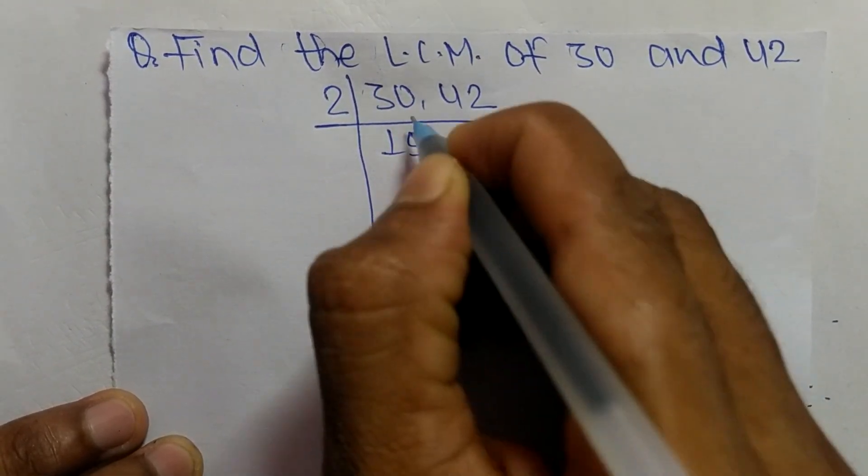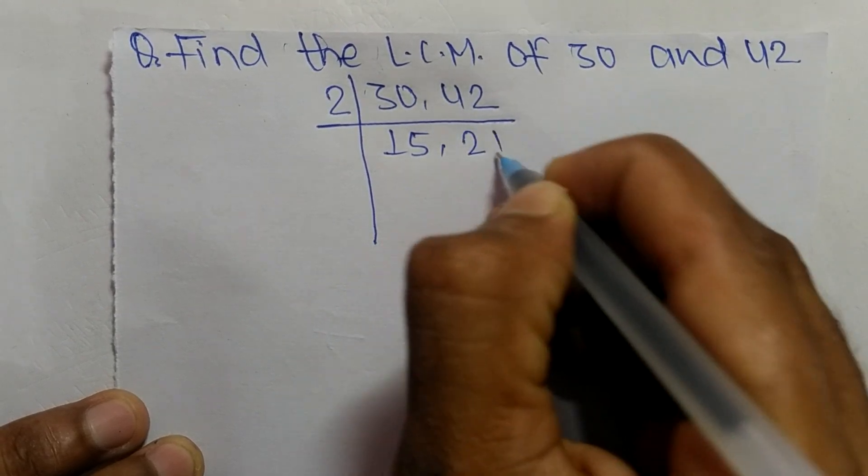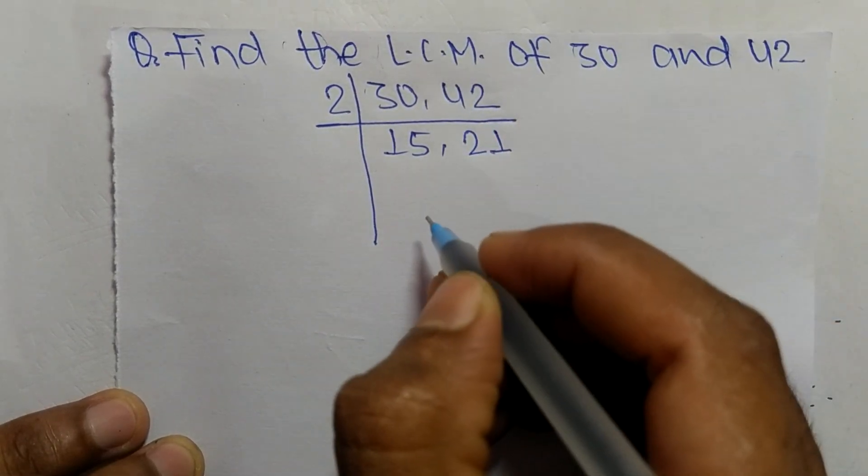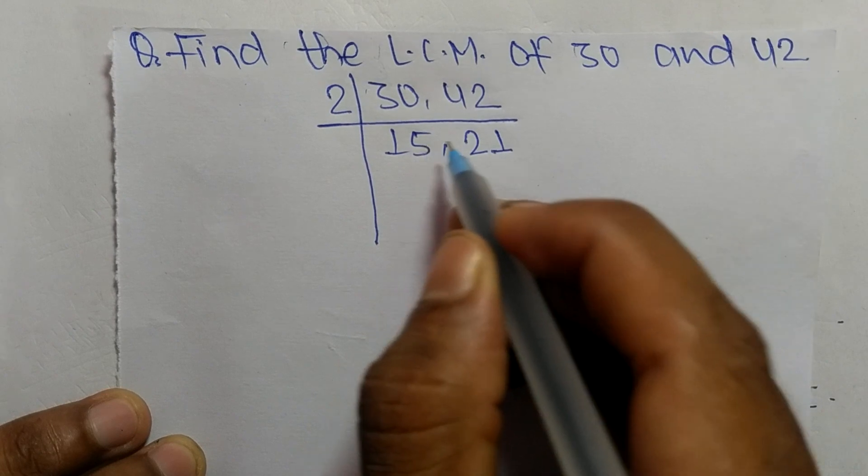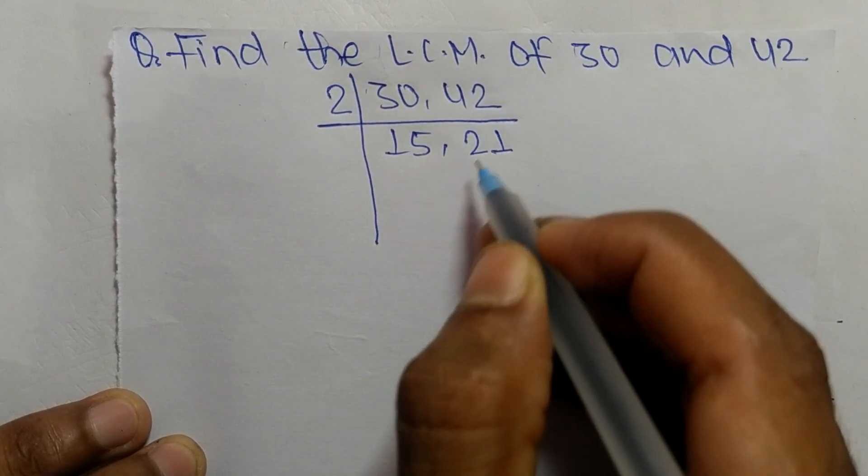So 2 times 15 means 30, and 2 times 21 means 42. Now 2 can't exactly divide both 15 and 21.